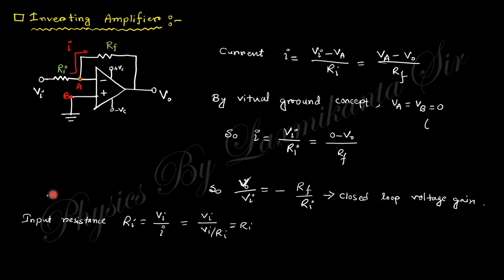In the Op-Amp, the virtual ground concept states that the voltage at the two input points must be the same. Since the non-inverting input is connected to ground, the voltage at point P is zero, so voltage at point A must also be zero. Since the input impedance of the ideal Op-Amp is infinite, current through that path is negligible. Applying KVL: (Vi − 0)/Ri equals (0 − Vo)/Rf.